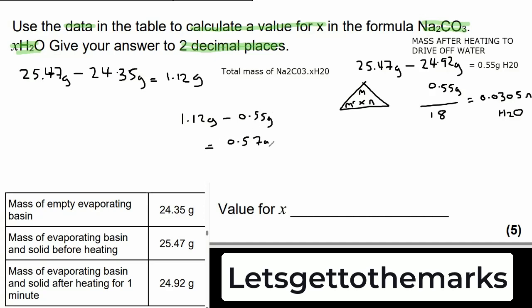Now we know from the first calculation the mass of solid at the start was 1.12 grams. Take the water away, we find out that once we've evaporated the water the solid that's left is 0.57 grams.